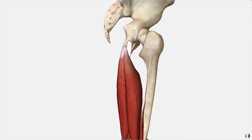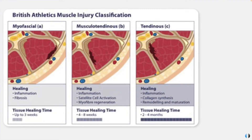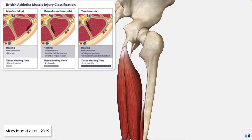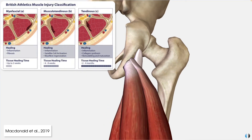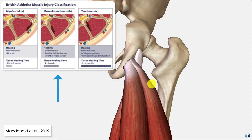Does the location of the injury matter? Absolutely. Here on the screen we can see a brilliant diagram from McDonald et al, 2019, looking at hamstring injury classification. When there is an injury to the myofascial part of the muscle — perhaps where the muscle belly runs close to the skin — healing time is relatively quick at around three weeks. Grade B, where the injury involves the musculotendinous junction, healing time increases to four to eight weeks.